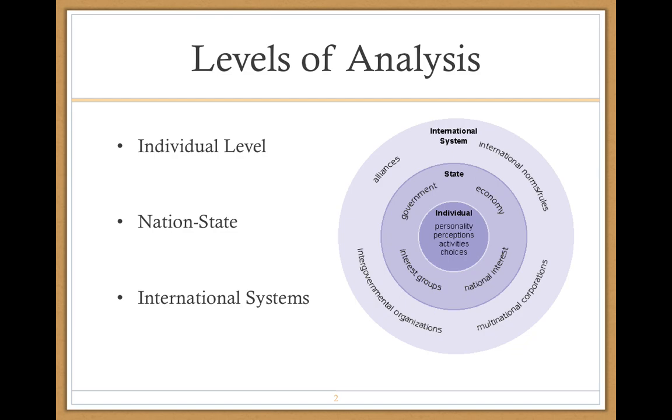Would things have unfolded differently in terms of the Holocaust, in terms of World War II? And so explanations at this level must relate differences in the characteristics of decision makers to differences in the decisions they make. So you're really looking at individual behavior to see everything else held constant.